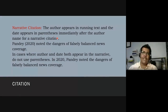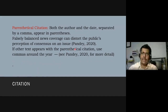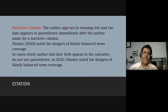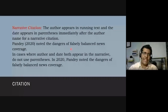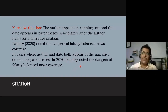The second kind is the narrative citation, where the author appears in the running text and the date appears in parentheses. For example: 'Daytwo (2020) noted the dangers of falsely balanced news coverage.' If both author and date appear in the narrative — for example: 'In 2020, he noted the dangers...' — then neither needs additional parenthetical treatment. These are two different ways of citing sources within the text.